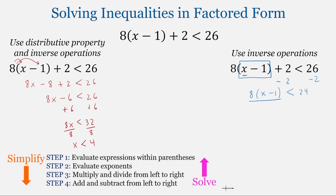We still have the parentheses multiplied by 8, so to undo the multiplication we'll divide both sides by 8, giving us x minus 1 in parentheses less than 3. Now everything in parentheses is by itself on the left side and we can drop those parentheses. We have x minus 1 less than 3; add 1 to both sides, and we end up with x less than 4.